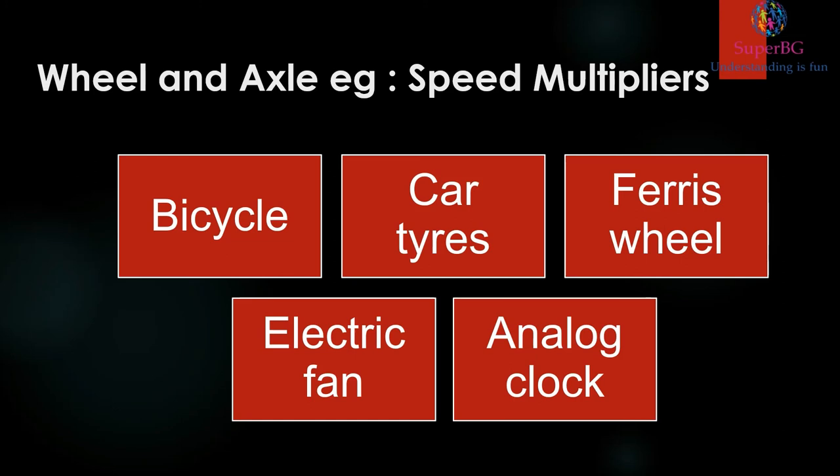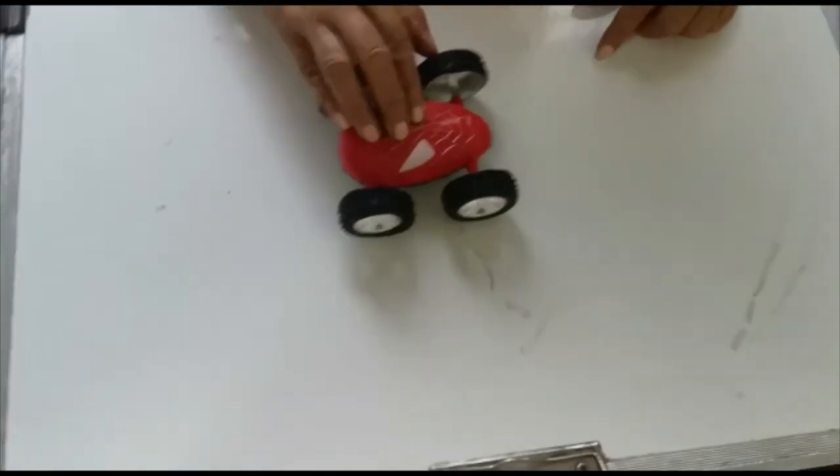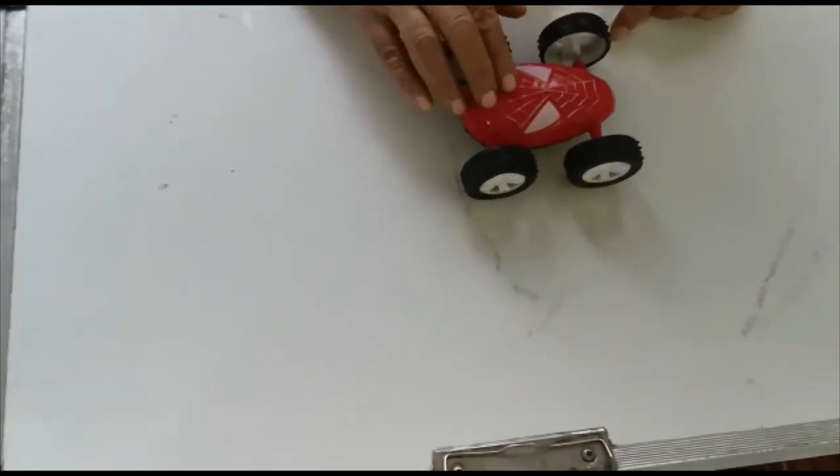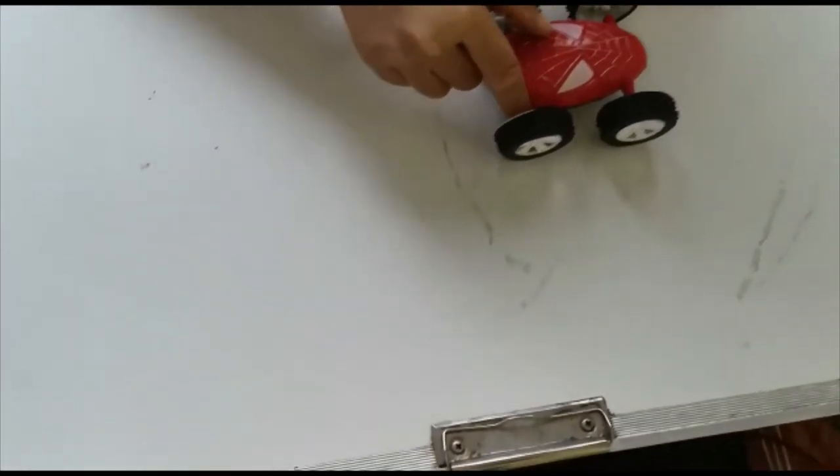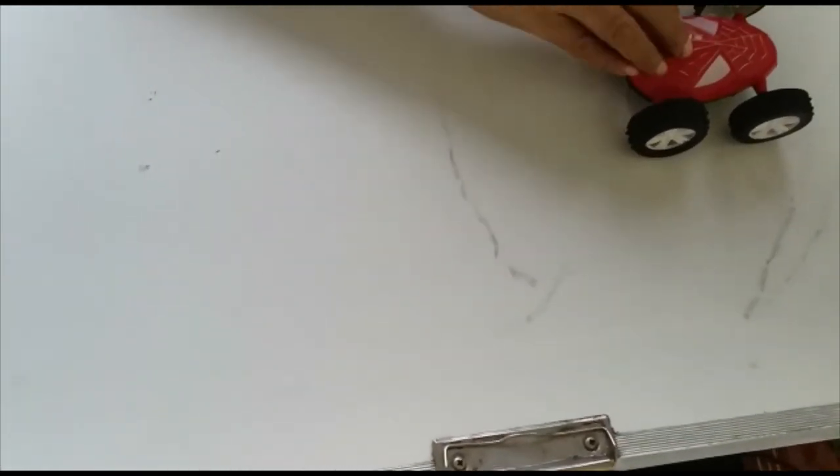Now let's look at the real life examples. Here you can see this wheel and axle. It is serving as a speed multiplier. The force is applied and the axle will get transferred to the wheel. As a result it goes a great distance, although the axle turns only for a short distance.